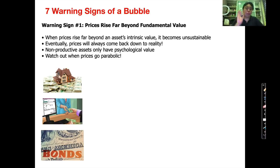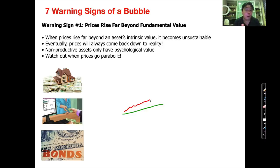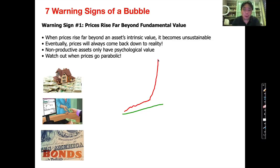Warning sign number one is when the price of an asset goes far beyond its fundamental intrinsic value and the price becomes unsustainable. In any asset there's always a fundamental value. Because of greed and speculation, the price at times is driven much higher. Usually when the price goes up, it goes up at a 45-degree angle. But after a while, with intense greed and speculation, the price goes parabolic — it goes up 90 degrees. Like a rubber band stretched too fast and too high, it will eventually snap back. Once prices get too far above their fundamental intrinsic value, they will eventually burst and snap back to reality.